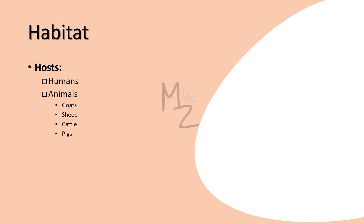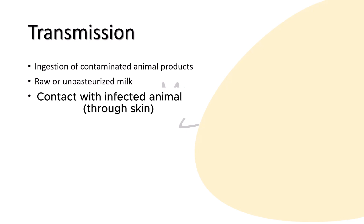Habitat: Human beings are its host because it causes brucellosis in them, and it is also found in animals because it causes zoonotic infections. Animals include goats, sheep, cattle, and pigs. Transmission: Brucella enters the human body by ingestion of contaminated animal products like raw or unpasteurized milk, through the skin by direct contact in an occupational setting such as an abattoir (slaughterhouse), or by contact with an infected animal.